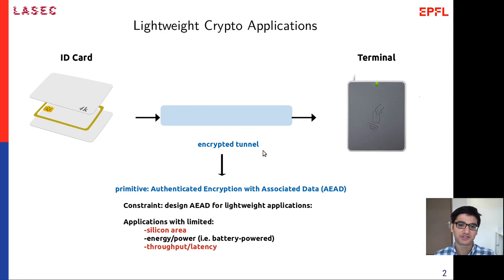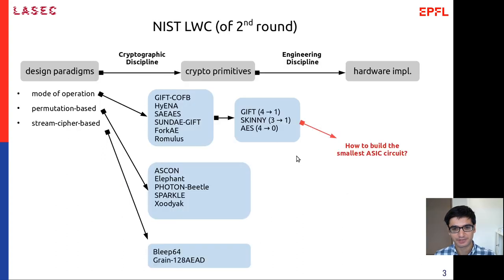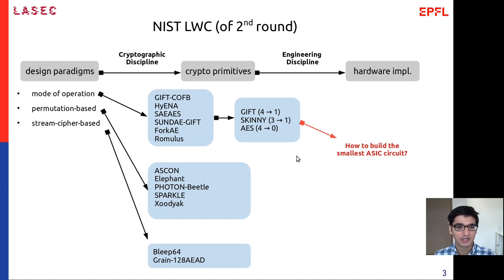When we talk about efficiency in our paper, what we refer to is first the silicon area of the final circuit, and then the throughput and latency metrics. Our efforts go in parallel to the NIST lightweight cryptography standardization process, which is ongoing. Currently it is in the final round, but at the time of writing this paper, it was at the end of the second round.